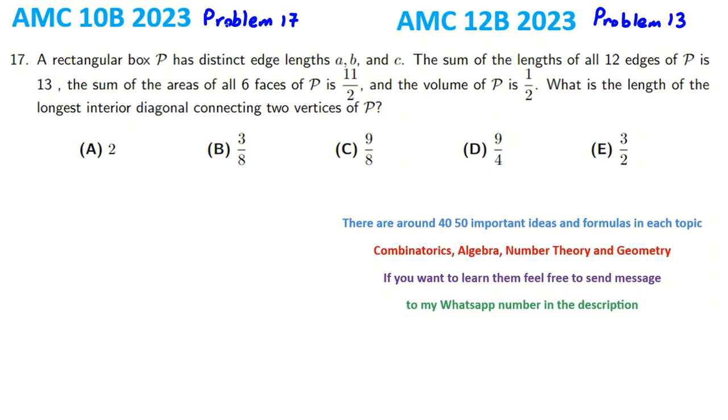This is problem 17 of AMC 10B and problem 13 of AMC 12B. It says a rectangular box P has distinct edge lengths a, b, and c. If we draw it, it will be something like this.